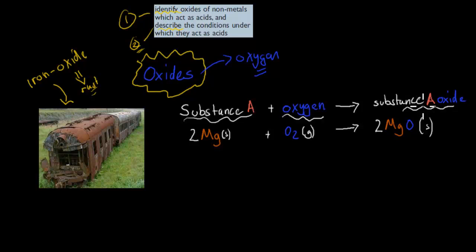An example is 2Mg + O2 becomes 2MgO. We've got magnesium reacting with oxygen to form magnesium oxide, and you can see the oxide in the structure.